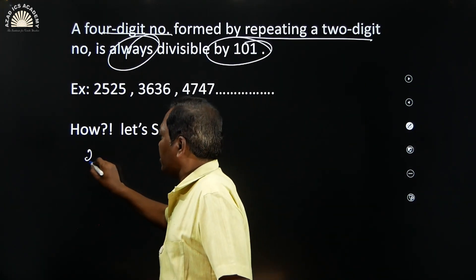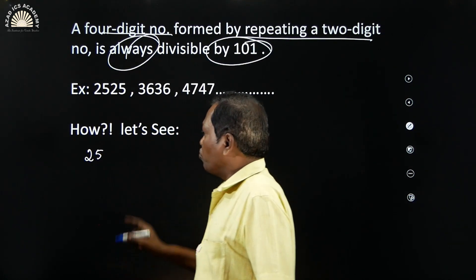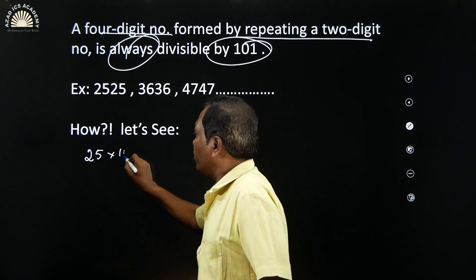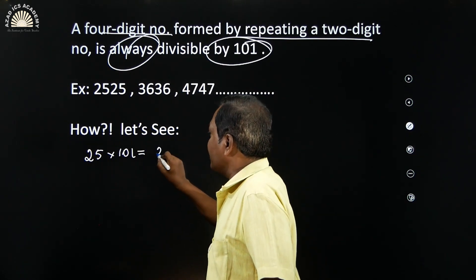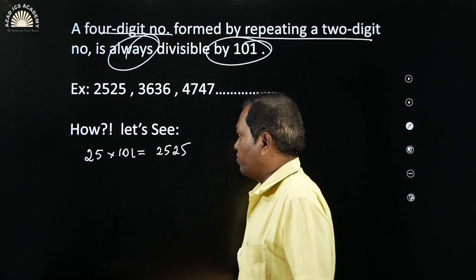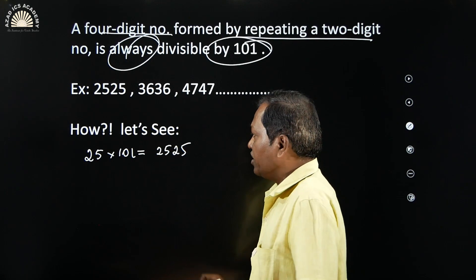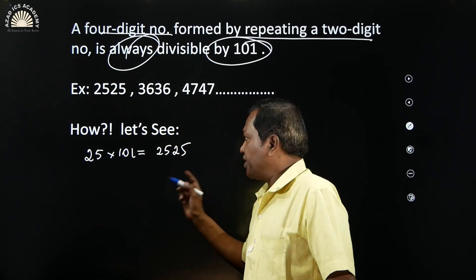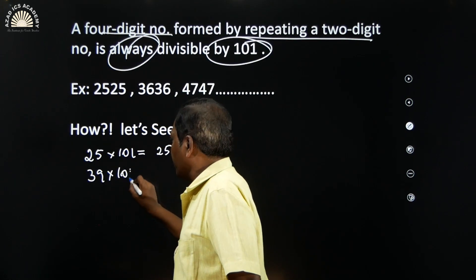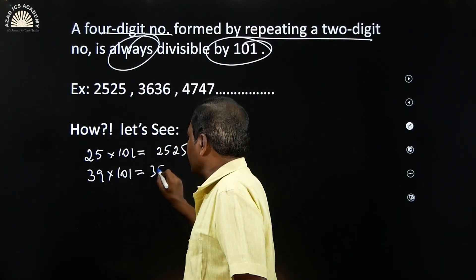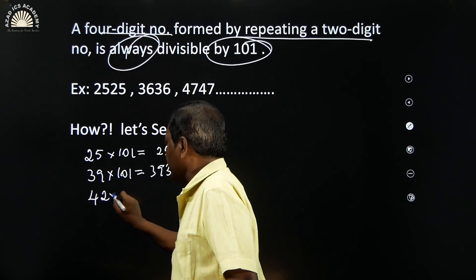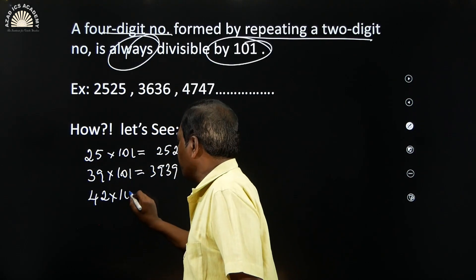This is one of the properties of numbers. You can take any 2-digit number and multiply it by 101 — the result will be the 2-digit number repeated. For example, 39 × 101 = 3939.